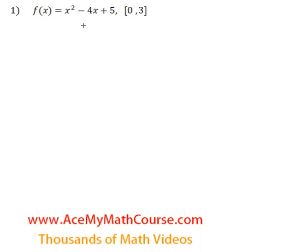Now let's find the absolute maximum and the absolute minimum of this function, f of x is x squared minus 4x plus 5, on this interval between 0 and 3.